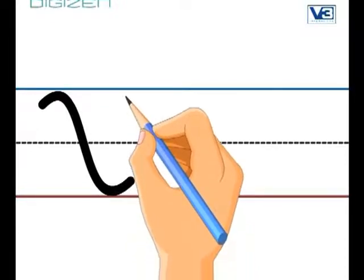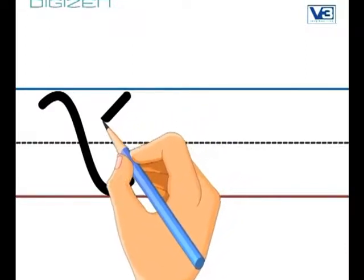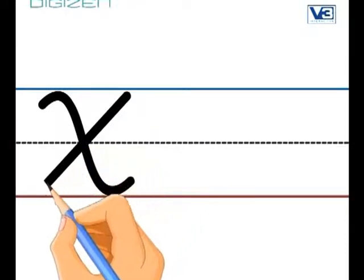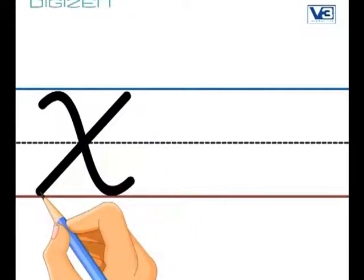Hop up to that top line again and back down to the bottom. See how we cross it near that middle line.